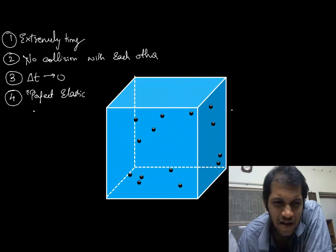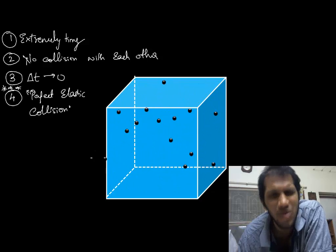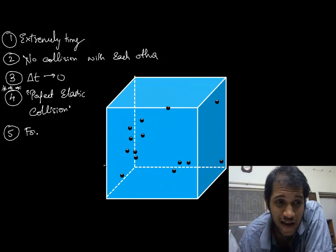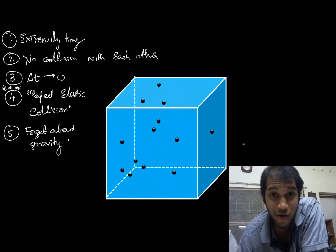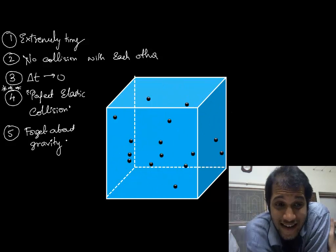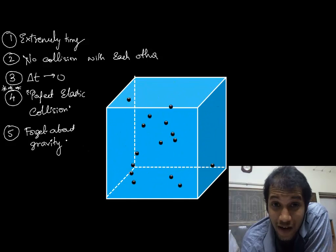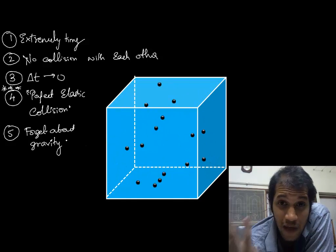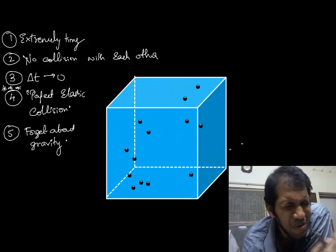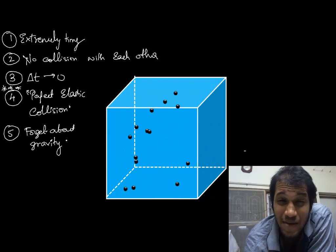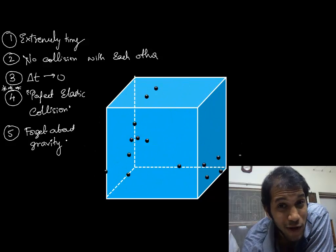We call that a perfect elastic collision — that's an important assumption, and again not a bad one. One more important assumption: we are going to forget about gravity. Gravity does affect things, but since these molecules are zooming around at very high speed — around a thousand meters per second — we can completely neglect gravitational acceleration. So we are going to ignore gravity.